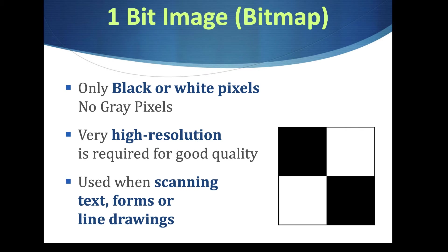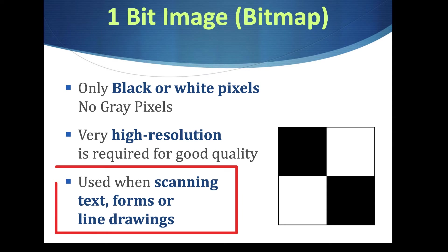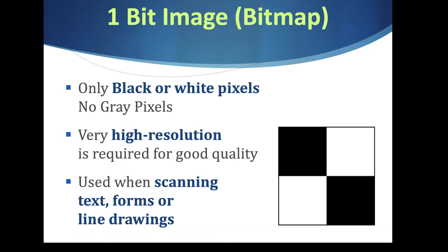One-bit images must be very high resolution or they look choppy because there are no smooth edges. This format is used for things like scanning a form you need to fill out and send back, or for line drawings. It's hardly used much anymore, but you'll see it in scanner software as the 'black and white' option versus 'gray' or 'full color.'